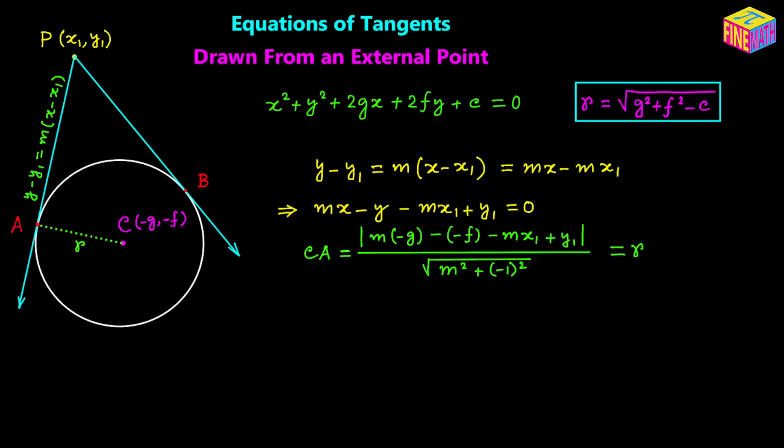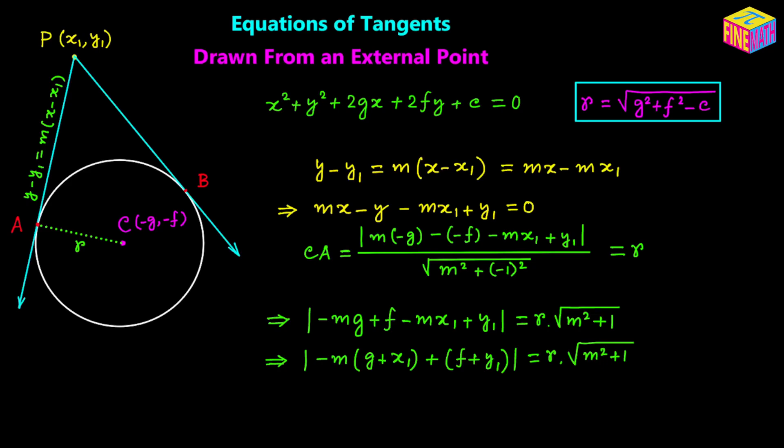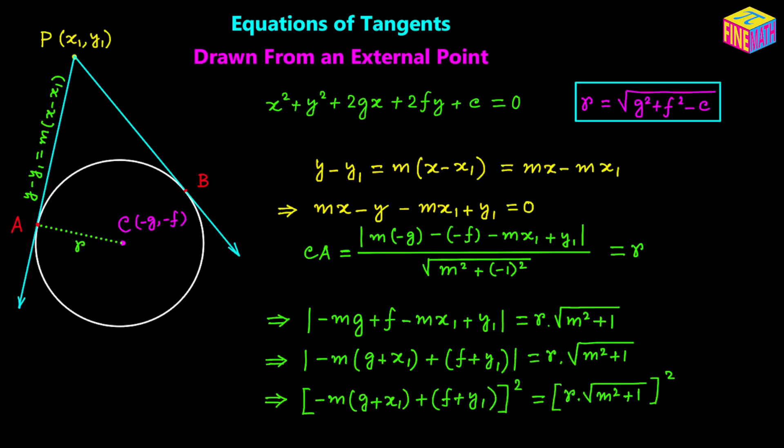The distance from center to the tangent line equals the radius r. Using the point-to-line distance formula with the tangent line equation, we set that expression equal to r. Multiplying both sides by the square root of m squared plus 1 gives us a simplified equation, and then squaring both sides eliminates both the absolute value sign and the square root, giving us r squared times m squared plus 1 on the right-hand side.